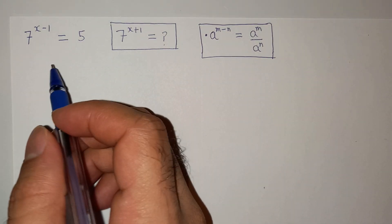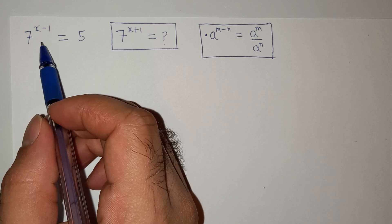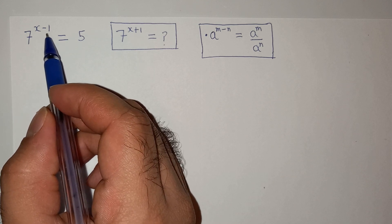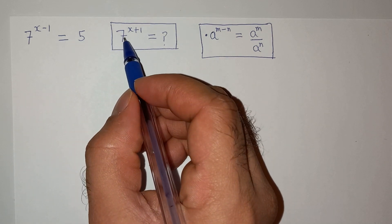Hello friends, welcome back to your channel. I hope you guys are doing well. So today we are going to solve this question which is 7 power x minus 1 equals to 5. We need to find the value of 7 power x plus 1.